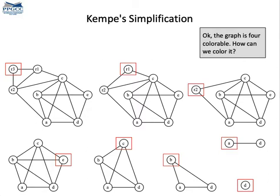So we continue removing nodes like this until we either find a graph where no node can be removed or we eliminate every node in the graph.